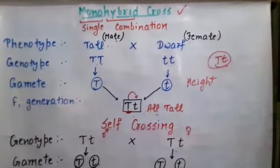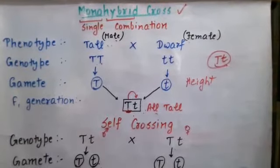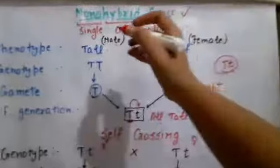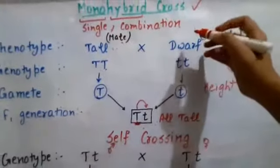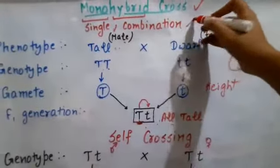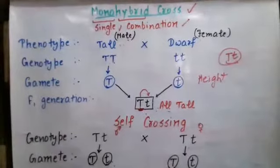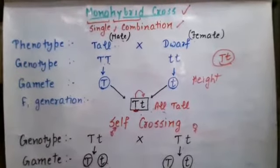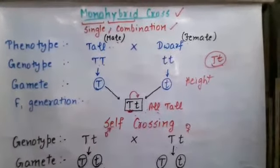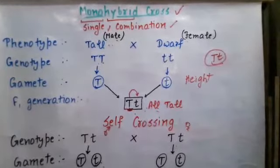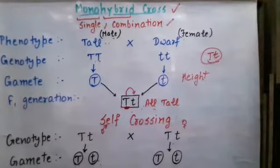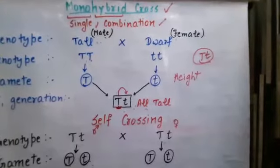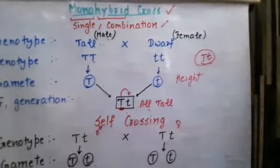Welcome to the class students. Today's topic is monohybrid cross. Mono means single, hybrid means combination, so monohybrid means single combination. The proper definition: a monohybrid cross is a genetic mix between two individuals who have a homozygous genotype.